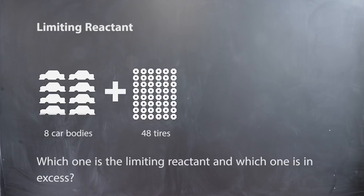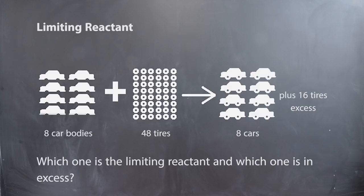Think about which one is the limiting reactant and which one is in excess. We can form eight cars and we would have 16 tires in excess. So the limiting reactant is the car bodies and the excess are the tires.